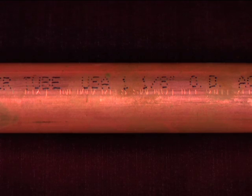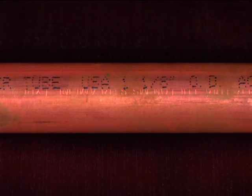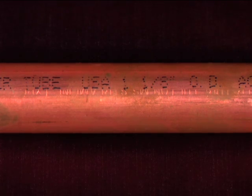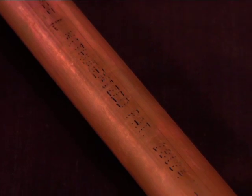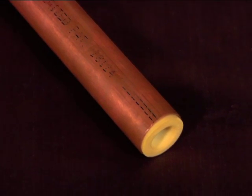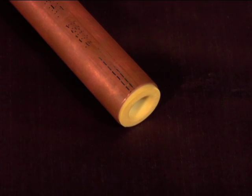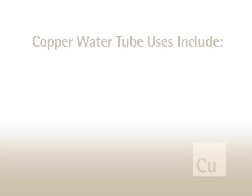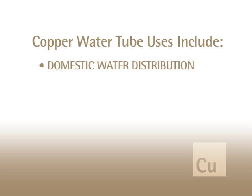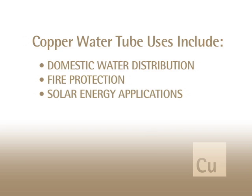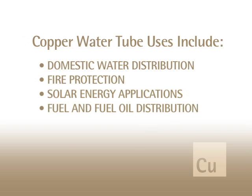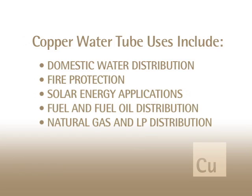The second is med gas tube for medical gas systems. Also nominally sized, it is available in hard tempered straight lengths only. Like copper water tube, medical gas tube is available in type K or L for different pressure applications. However, to maintain the utmost cleanliness of the medical gas distribution system, the med gas tube interior comes capped until it's ready to be installed. Keep in mind, copper water tube has many uses, including domestic water distribution, fire protection, solar energy applications, fuel and fuel oil distribution, natural gas and LP distribution, and refrigeration. Copper tube can be joined by various mechanical methods depending on the application and codes and regulations.